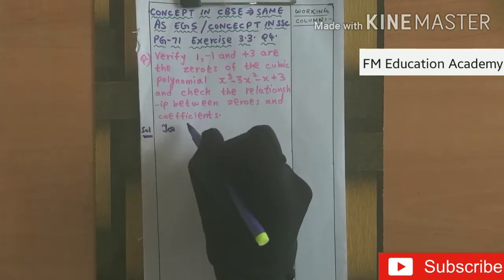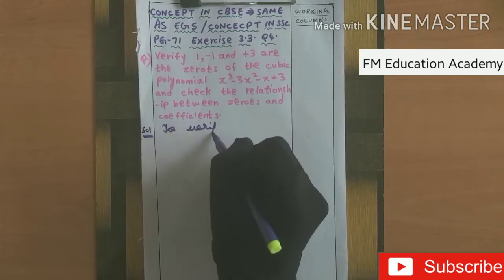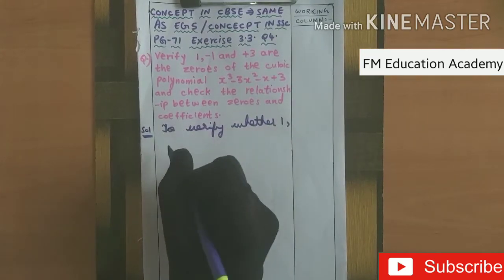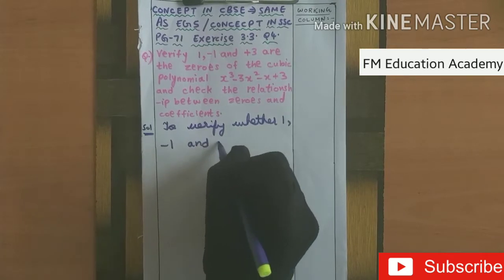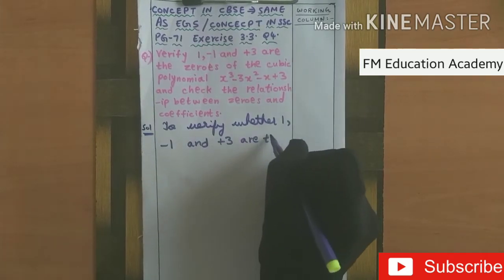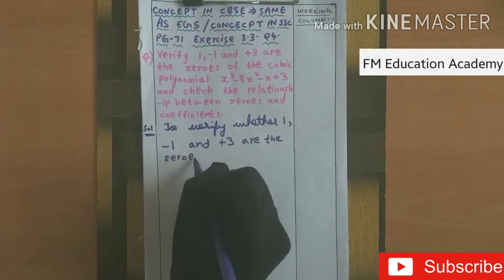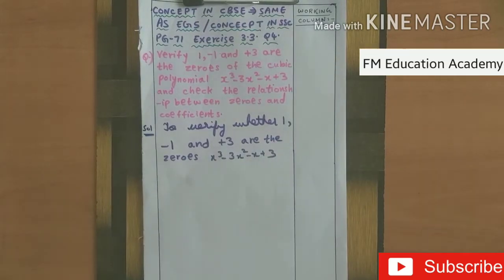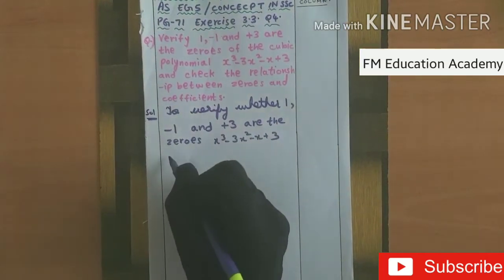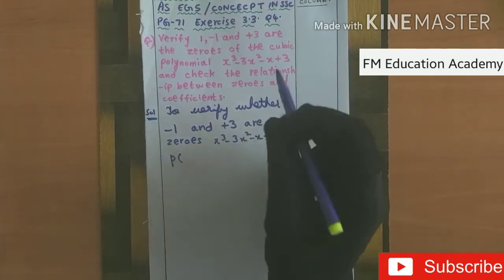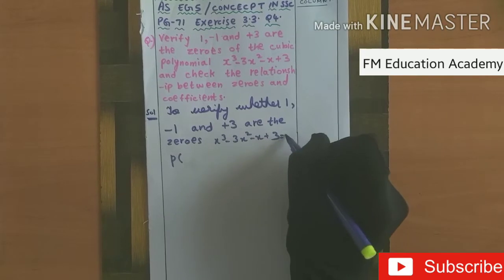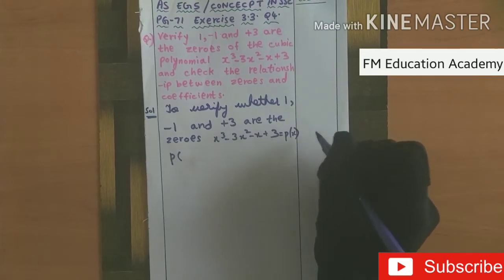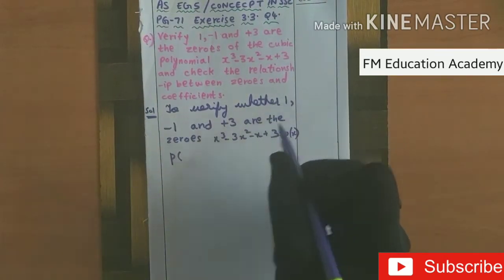So I have to verify whether 1, minus 1, and plus 3 are the zeros of x³ minus 3x² minus x plus 3. I will let this polynomial be p(x), since it is in terms of x. First, since 1 is given, I will substitute 1 in place of x.